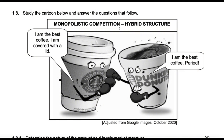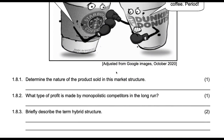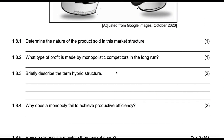It is a hybrid structure because it's like a combination of two market structures in one. There are elements of monopoly in it and elements of perfect competition. For example, a McFist is only found at McDonald's — that's kind of a monopoly type of thing. But it's a burger at the end of the day, and there are many burgers, so that becomes more like perfect competition. So it then is a hybrid structure.